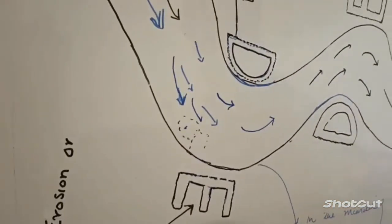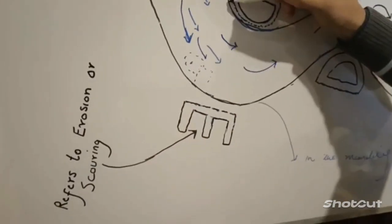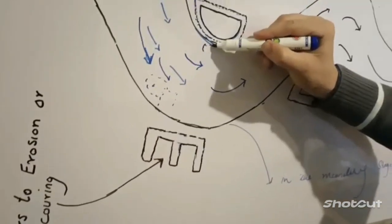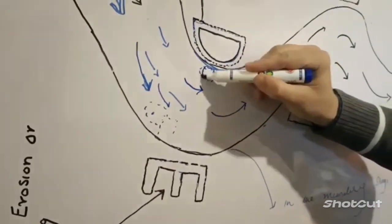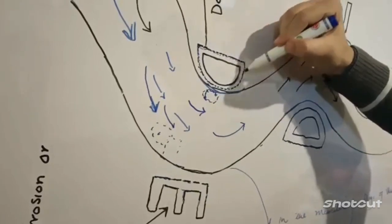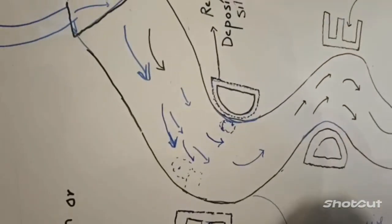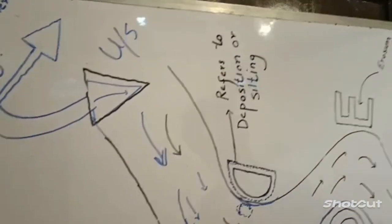So E here refers to erosion or scouring. And its opposite point is slightly aligned to make a D shape. So D here refers to deposition or silting.